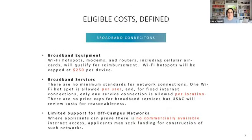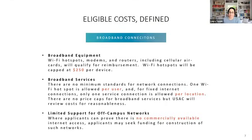Limited support for off-campus networks has been a big question — many applicants have asked whether they can build out their own networks. The general rule is no. There is one exception: where there is no commercially available internet access. That means if Comcast, Crown Castle, Spectrum, or similar services are available in your area, you would have to prove that service is not available at the specific subset of homes you want to build a network to support.